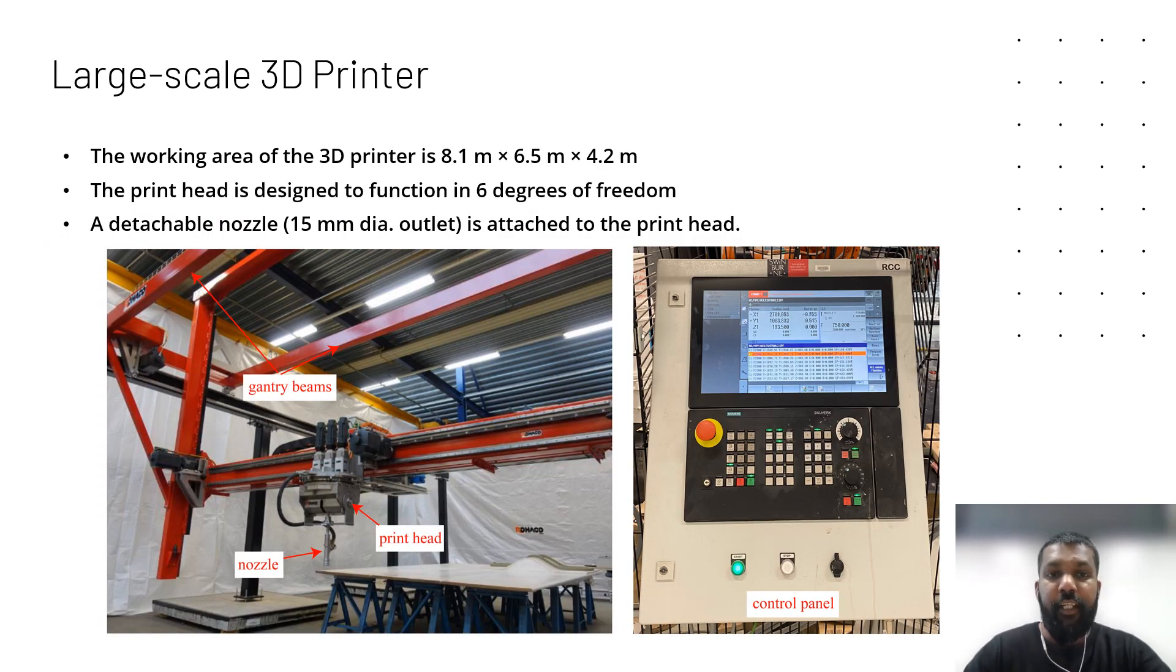From there, we get to printing. This is the 3D printer we used. It is installed in our Digital Construction Lab at Swinburne University with a workspace of 8.1 meters by 6.5 meters by 4.2 meters height. It has 6 degrees of freedom, which is 3 linear axis movements and 3 rotational axis movements. We can attach several nozzles, but for this study we attached a nozzle of 50 millimeters to the print head.